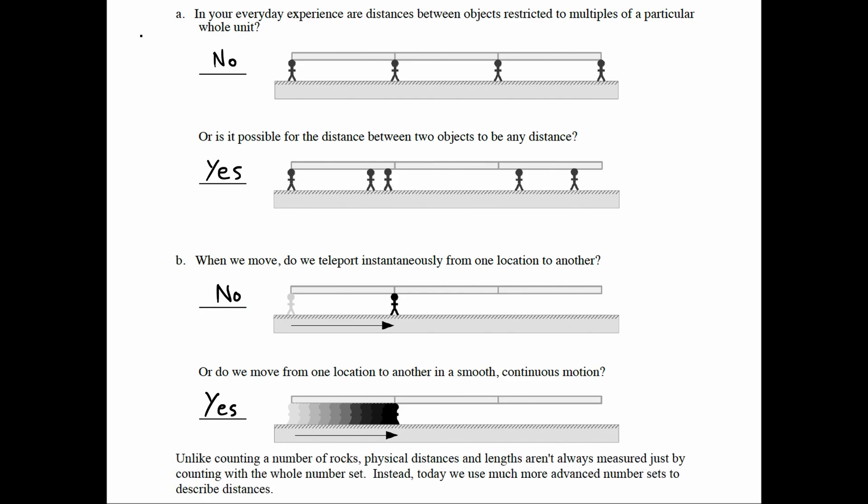Unlike counting a number of rocks, physical distances and lengths aren't always measured just by counting with the whole number set. Instead, today we use much more advanced number sets to describe distances. That brings us to the difference between discrete and continuous.